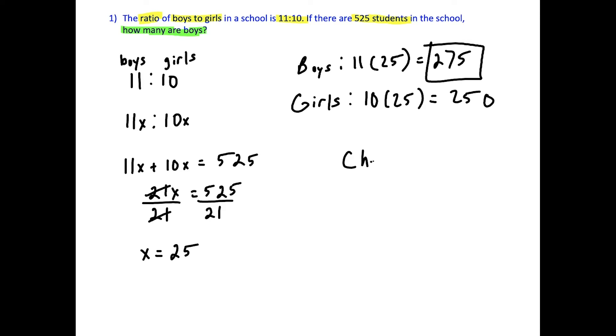And now just to check, when we add these numbers together, we should get 525. So 275 plus 250 does, in fact, add up to 525.